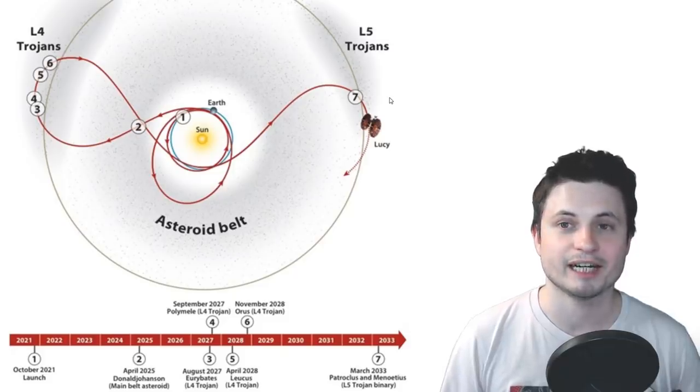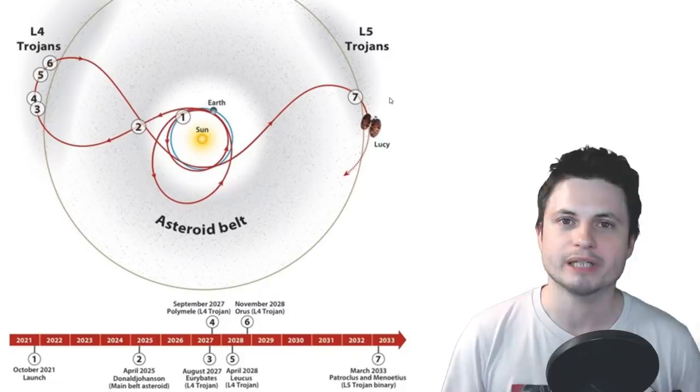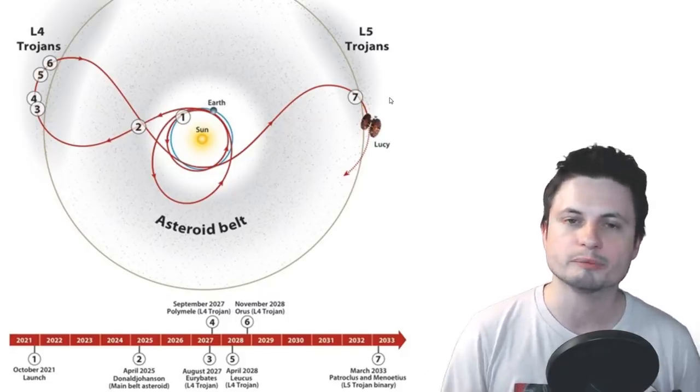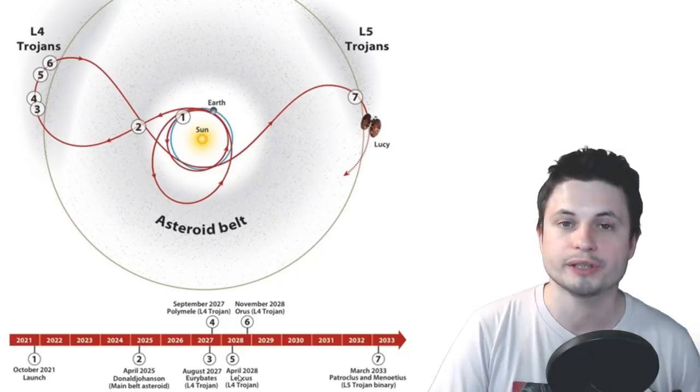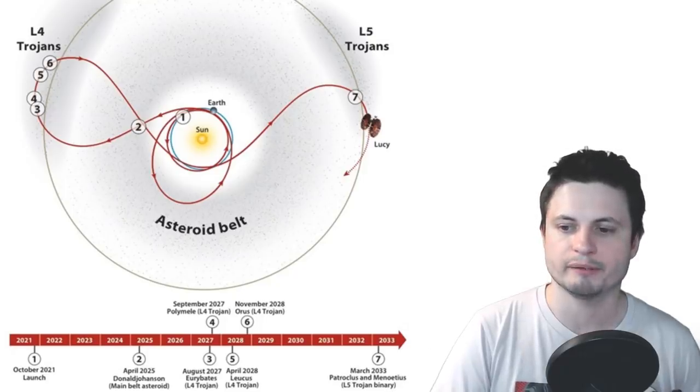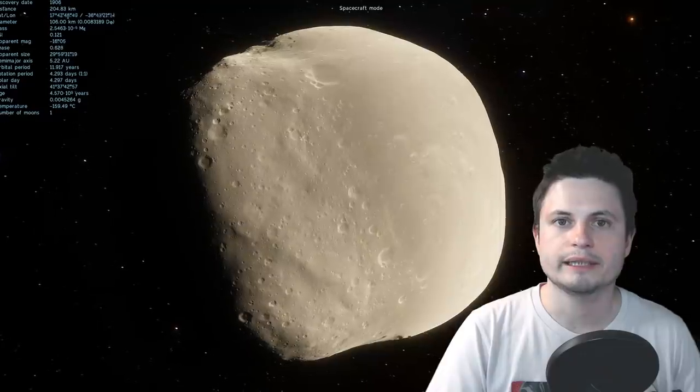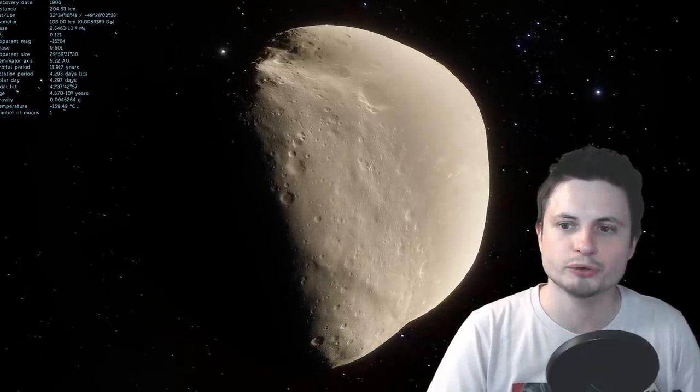The entire mission will take approximately 12 years. So by then, yeah, most of us will be pretty old. But nevertheless, it will actually allow us to understand the creation of the solar system with a lot more detail. And because we get to visit all of these objects and also study them in somewhat accurate detail, it even gets to visit a binary Trojan at some point, we'll actually get to learn quite a lot about pretty much everything in our solar system.